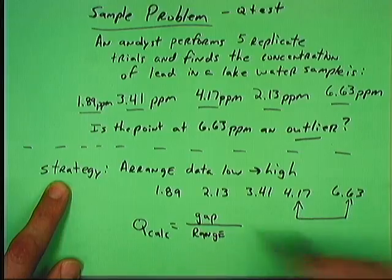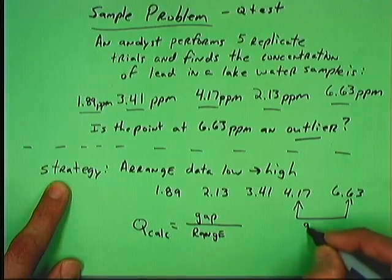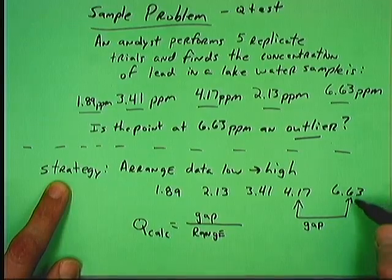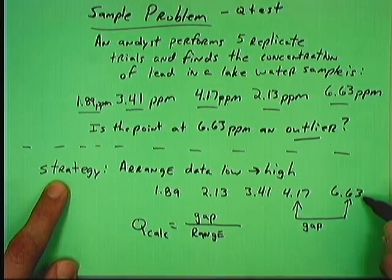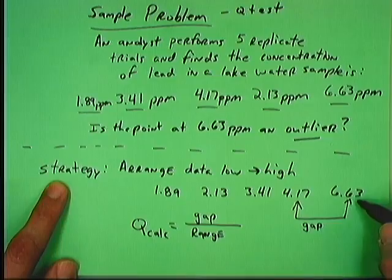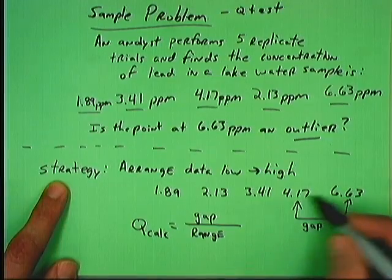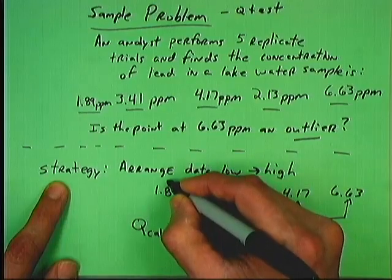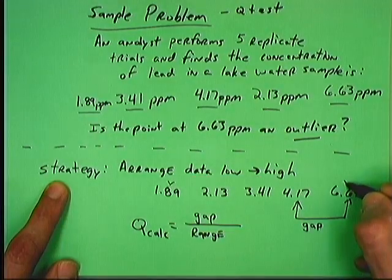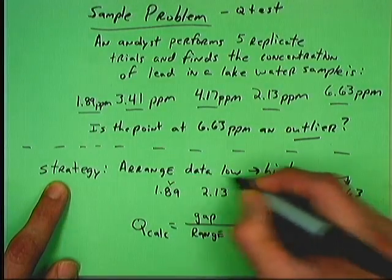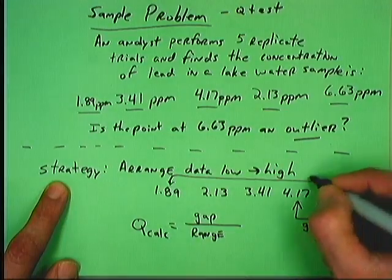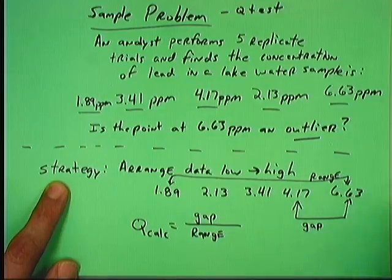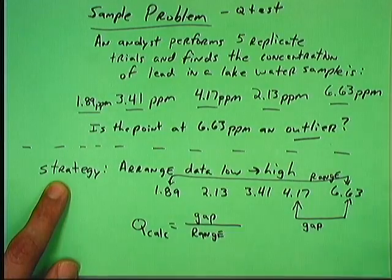Pretty simple calculation, but we need to define what these things are. It just so happens that the gap is defined as the numerical difference between the possible outlier and the next nearest point. So the difference between these two values is my gap. And the range is defined in the usual way. It's the high minus the low. Okay, so high minus the low, that's my range.